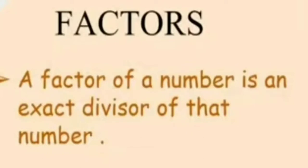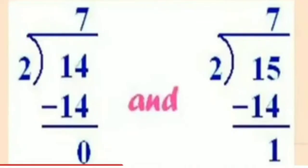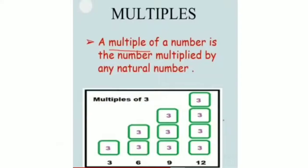Factors are the numbers which are exact divisors of any number. For example, 14 divided by 2: the remainder is 0 and the quotient is 7. So 7 and 2 are exact divisors of 14. In the next example, 15 divided by 2 gives remainder 1, so 2 and 7 are not divisors of 15 because they do not give remainder 0.